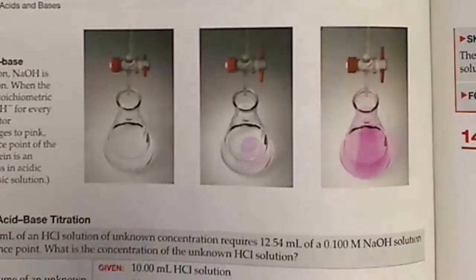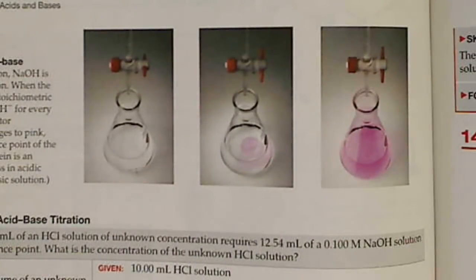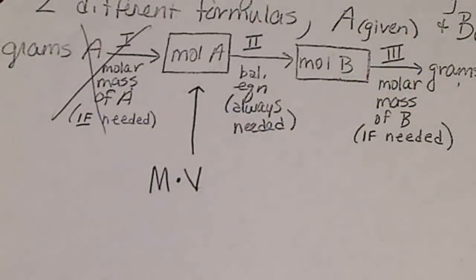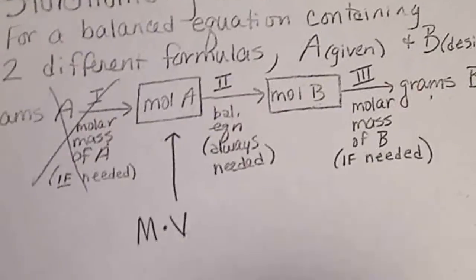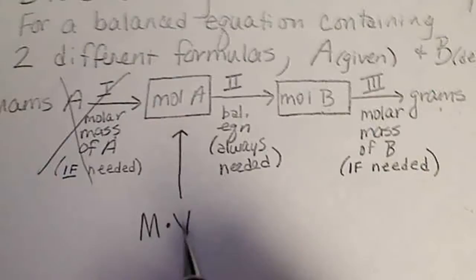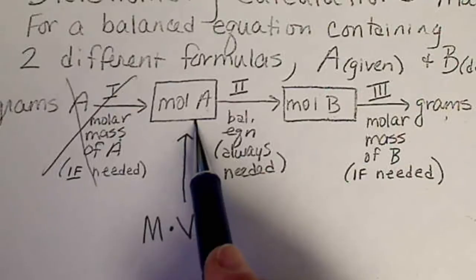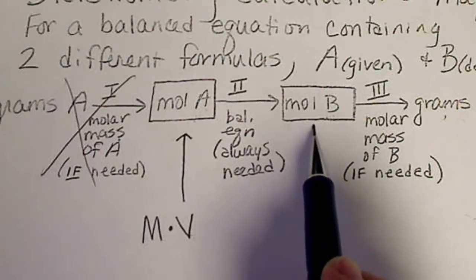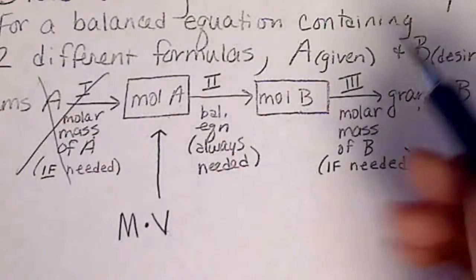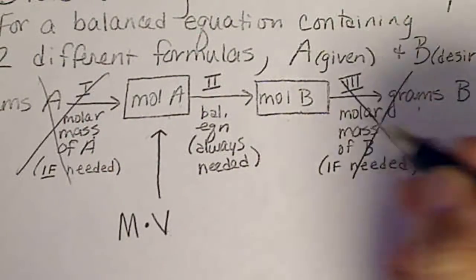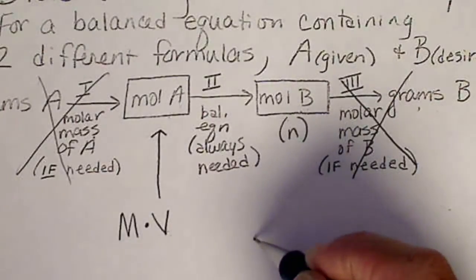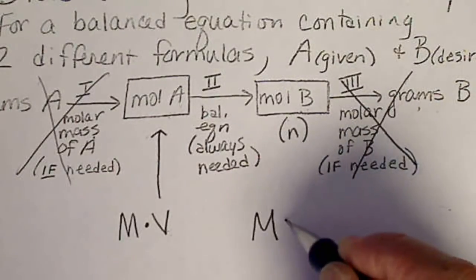So a titration problem, we're going to use the stoichiometry now. We are going to be given a molarity and a volume. This will use the molarity times the volume of what's given to calculate moles of what's given. The balanced equation will calculate moles of what we're looking for. And we are not going to go back to grams. Moles, remember, is n.